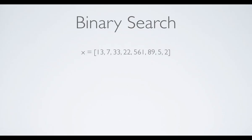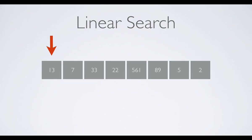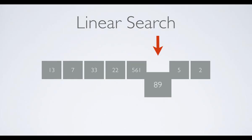We're going to start with this array. It's an unsorted array of numbers — 13, 7, 33, 22 — you get the idea. These gray boxes represent all the elements in the array, and in this case we've got eight. The first thing to understand about binary search is how linear search works. Linear search is the iteration over all the elements until you find what you're looking for. Let's say we're looking for number 89. We start with the first element and compare each element — 13, not 7, not 33 — on and on until we find the number we're looking for, which is 89.